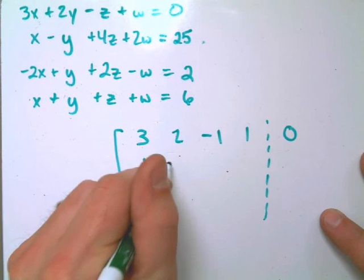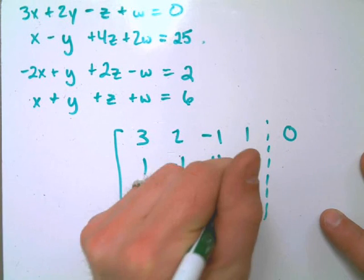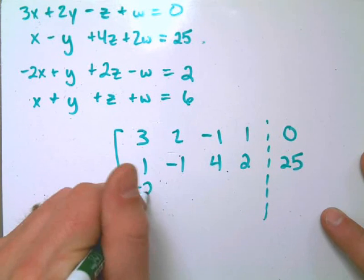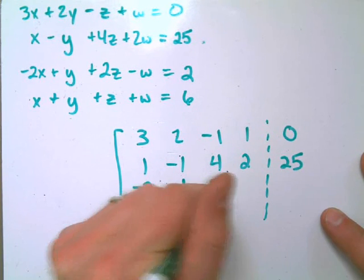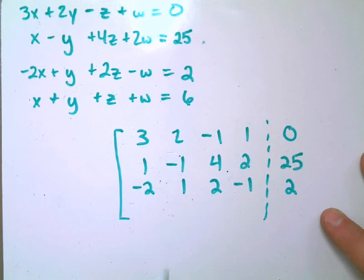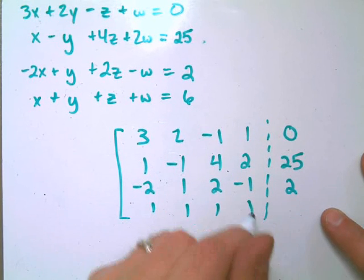I have one x, negative one y, four z's, two w's, and those add up to 25. I have negative two x, one y, two z's, negative one w's, that adds up to two. I have one, one, one, one, and that all adds up to six.